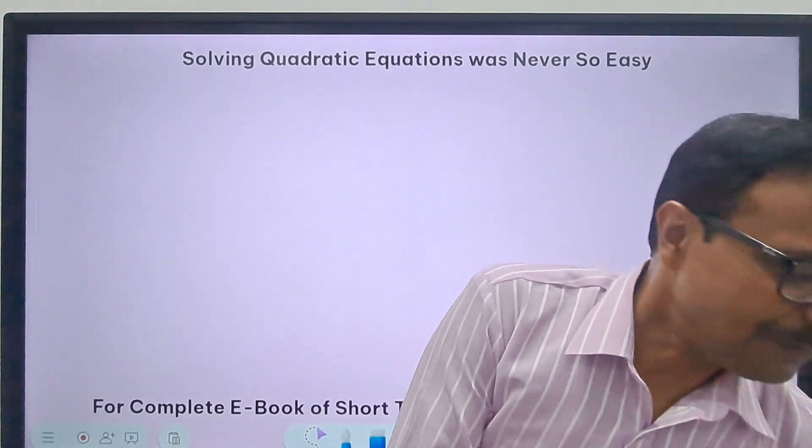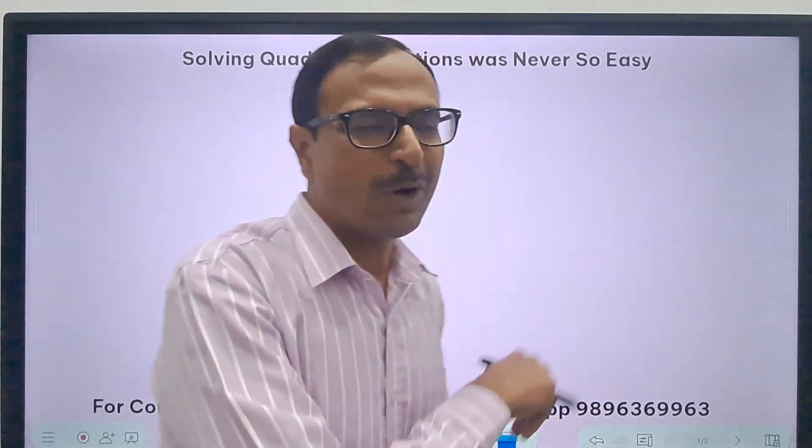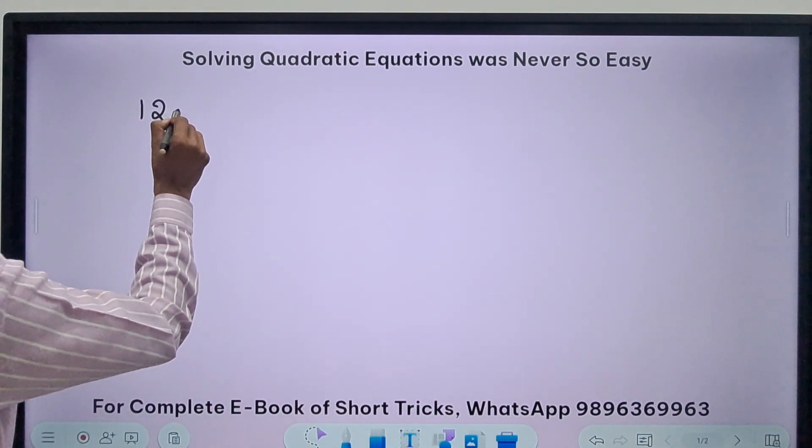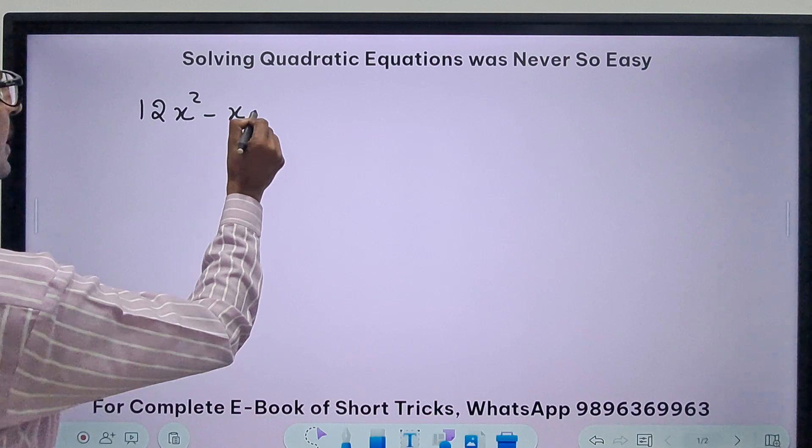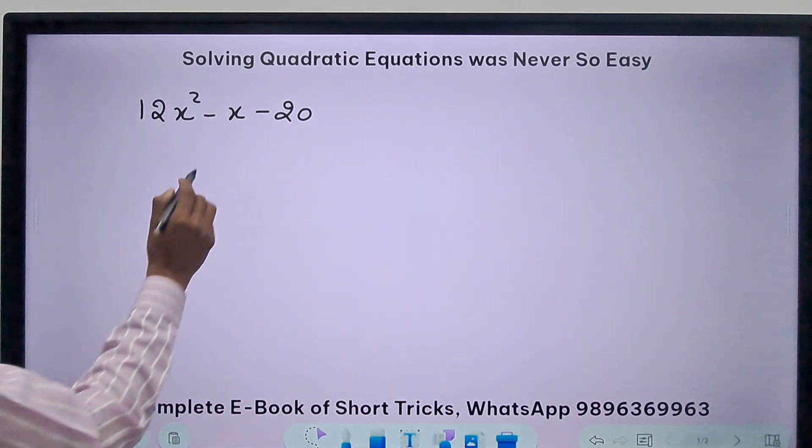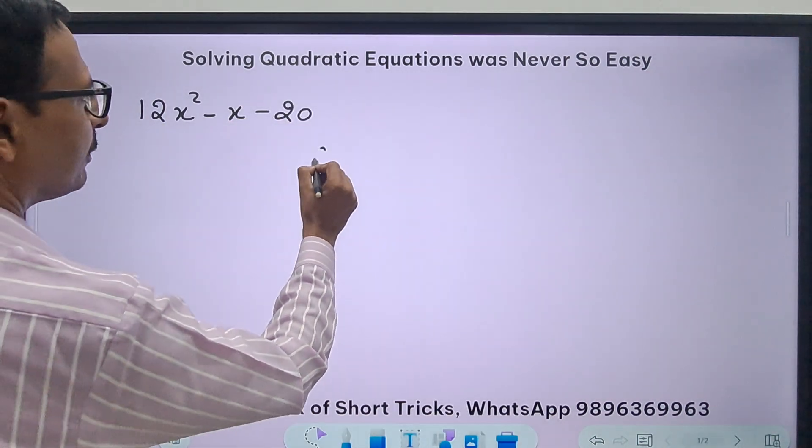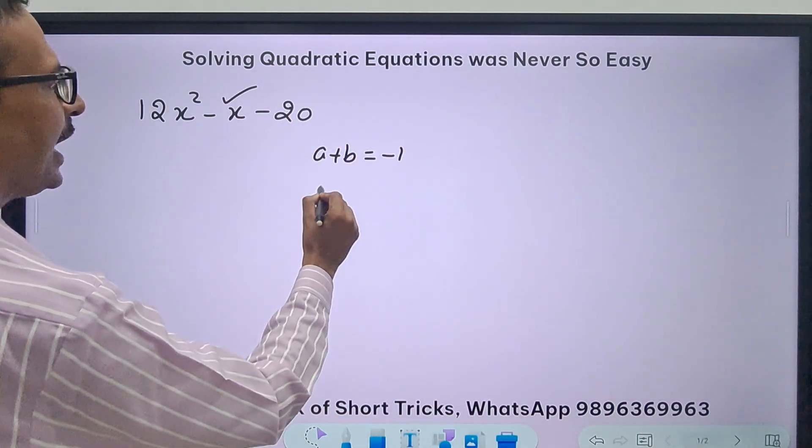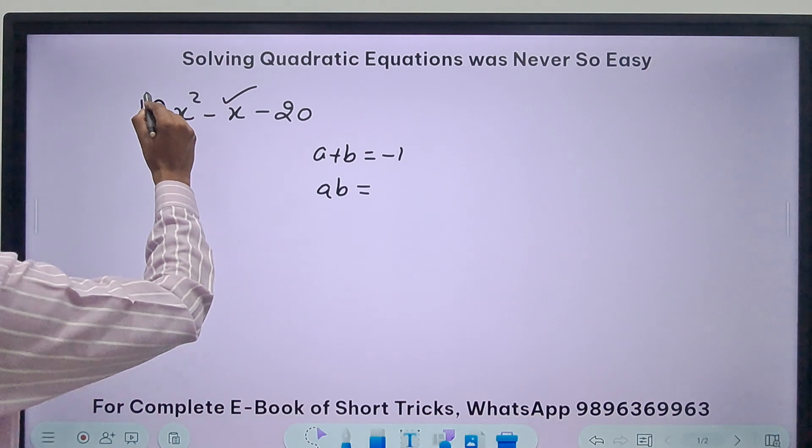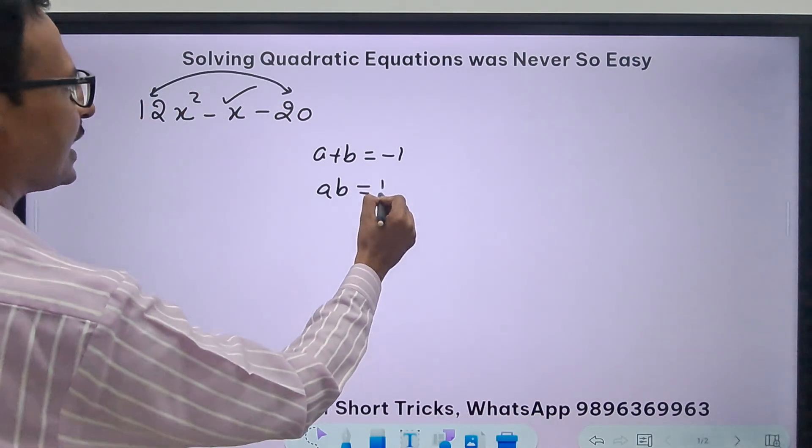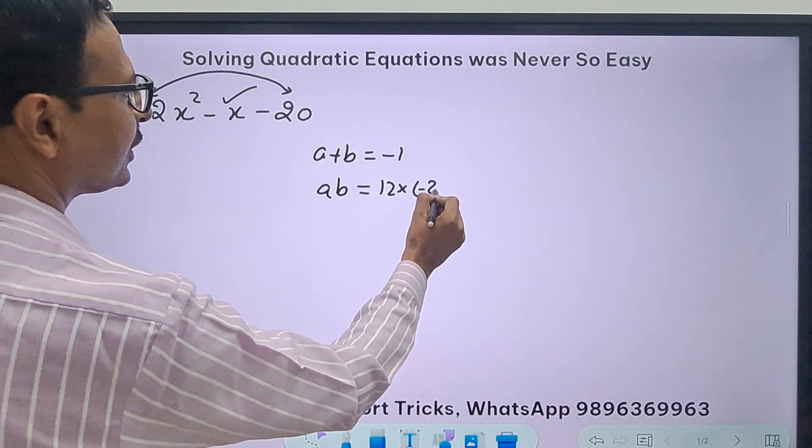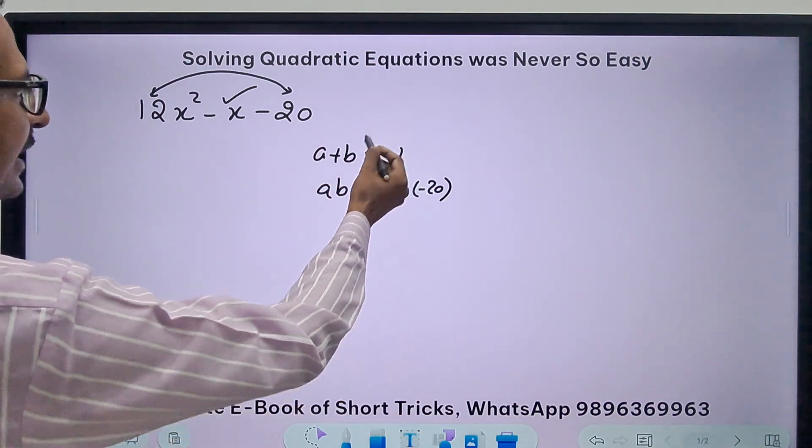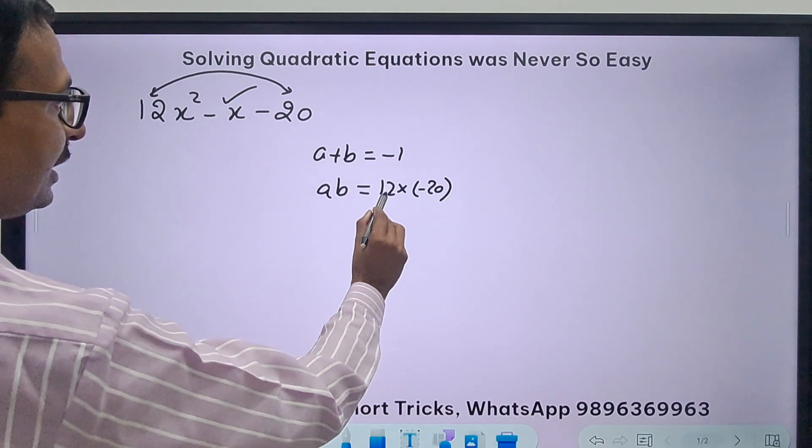Let's have the first question. The first question is 12x² - x - 20. Now we all know that we have to find two numbers a and b which add up to the middle term coefficient, that is -1, and whose product should be the product of the first and last, 12 times -20. This is the basic rule we follow.